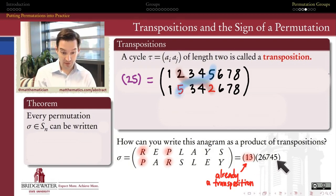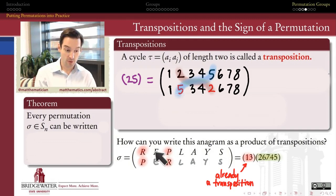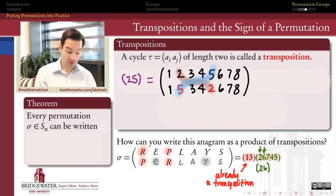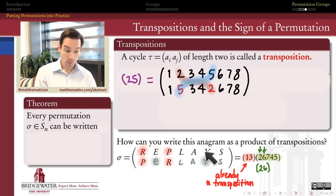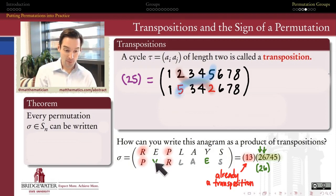If I want to express this cycle of length five in terms of transpositions, let's take the two and the six — the first thing happening in my five-cycle is that 'e' is going to position six. So let's do that transposition first. What happens is that 'e' moves into the position where I ultimately want it, but 'y' moves over into position two, which is not ultimately where I want it in my final word 'parsley'. So now I've gotten 'e' where I want, but 'y' is out of position. I'll take 'y' and move it next to where I want it to go, which is position seven.